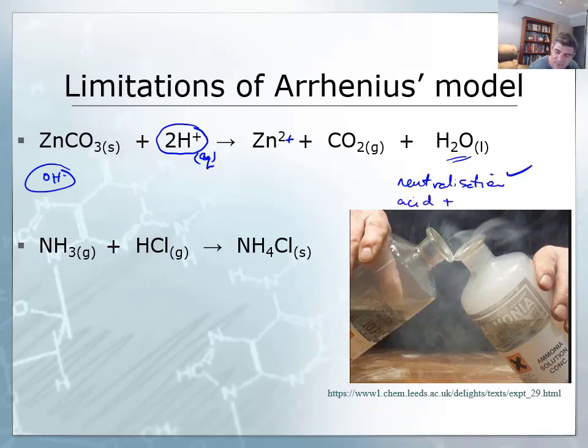So therefore we must have an acidic substance and a basic substance. The H+ ions fit our Arrhenius model nicely, but the zinc carbonate does not. There's a bit of a problem here, something is not quite fitting our Arrhenius model.